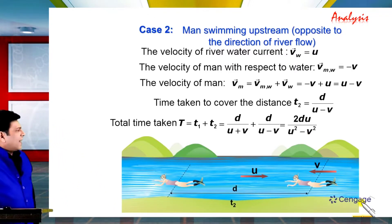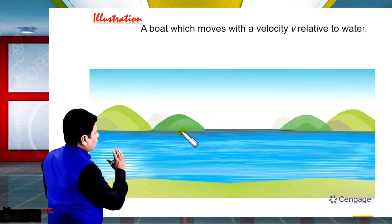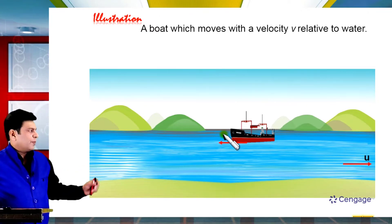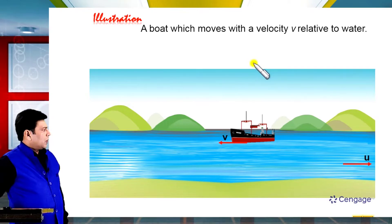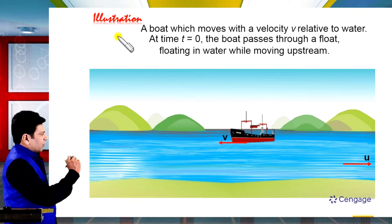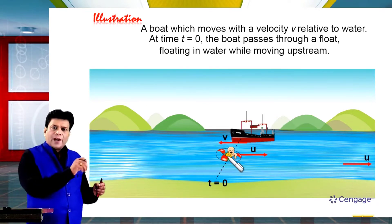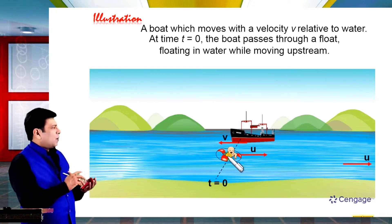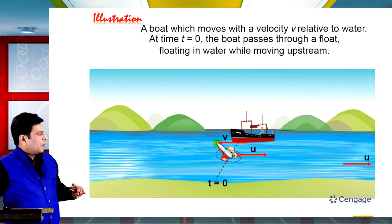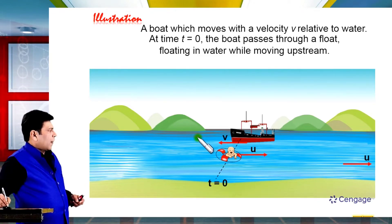Now let us move to the next illustration. A boat moves with velocity V relative to water. This boat is moving upstream with velocity V with respect to water, and the river current velocity is U. At time T equals 0, the boat passes a float that is floating in the water while moving in the upstream direction. The boat continues to move upstream up to time small t equals capital T.